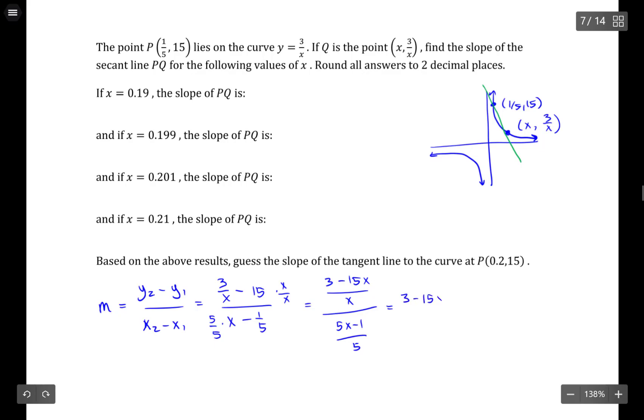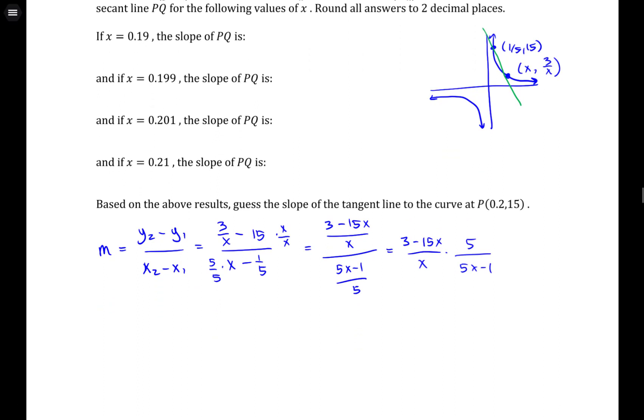So (3 - 15x)/x times, and instead of dividing fractions, I'm going to invert and multiply. And let's see here, it appears that I've got a common factor of 3 in this numerator here. And I could pull that out, and that would leave me 3 times (1 - 5x) times 5. Let me fix that, we'll just make this 15.